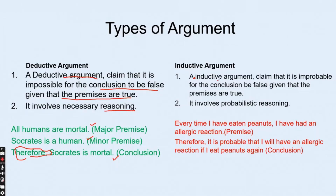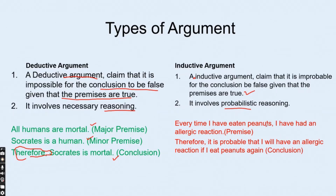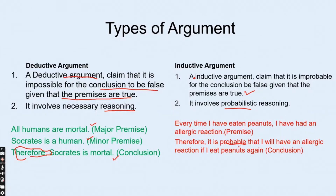An inductive argument claims that it is improbable for the conclusion to be false given that the premises are true. It involves probabilistic reasoning. For example: every time I have eaten peanuts, I have had an allergic reaction. Therefore, it is probable that I will have an allergic reaction if I eat peanuts again.